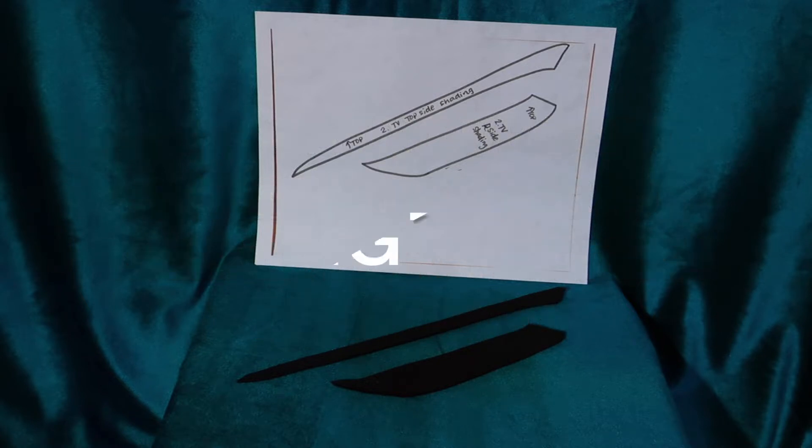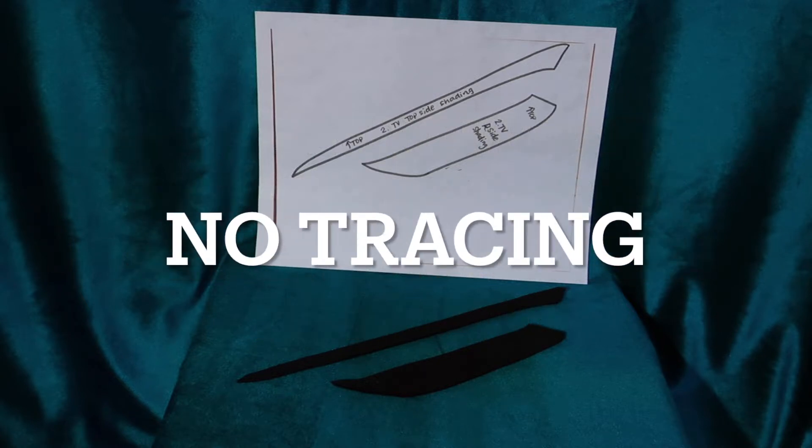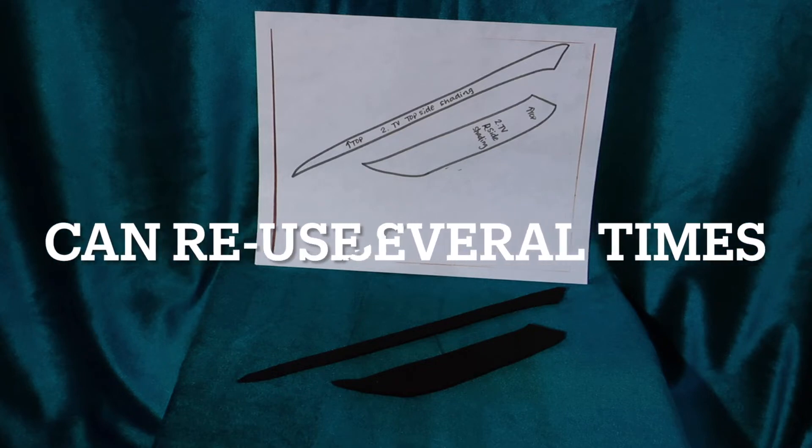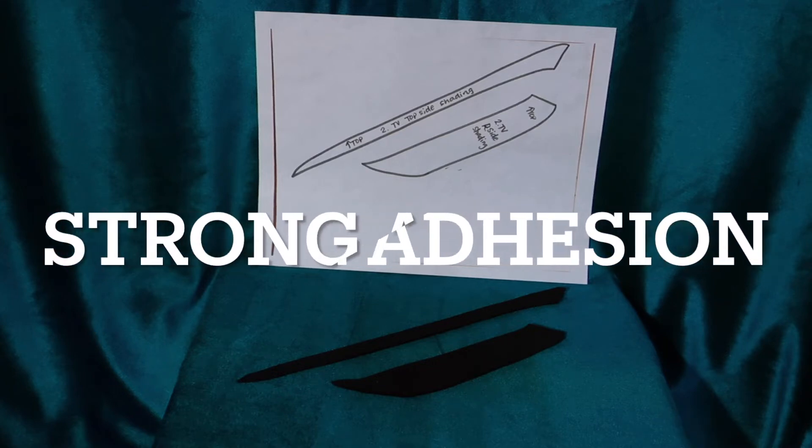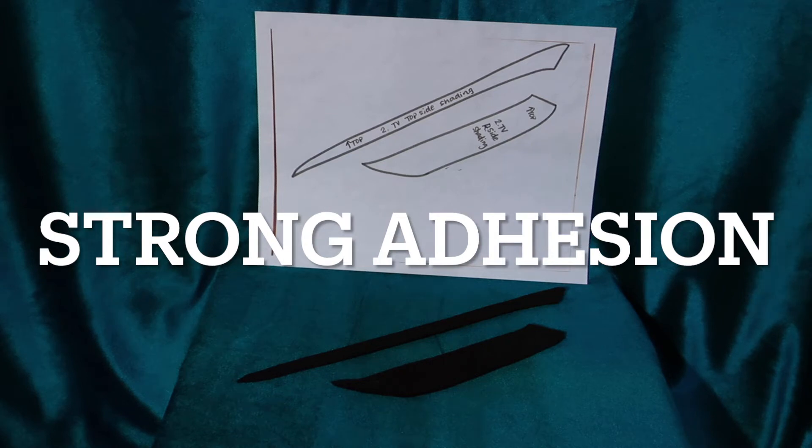There are several advantages to using this method. You can print an image directly onto the freezer paper so there is no tracing involved. You can reuse the freezer paper image several times. And the adhesion of the freezer paper to the felt is strong so it does not move when you go to cut out the pattern.